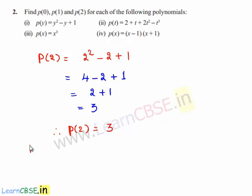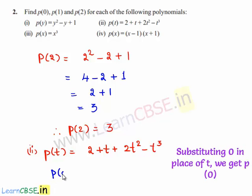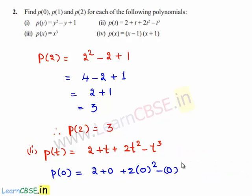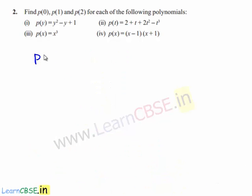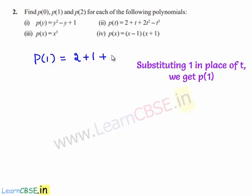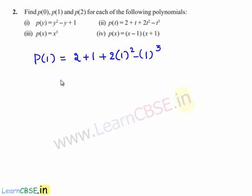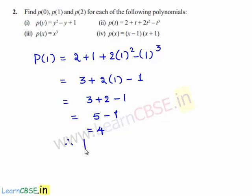Going on to the second part, p(t) equals 2 plus t plus 2t squared minus t cubed. p(0) equals 2 plus 0 plus 2 times 0 squared minus 0 cubed, which equals 2 plus 0 plus 0 minus 0, which equals 2. Therefore p(0) equals 2. p(1) equals 2 plus 1 plus 2 times 1 squared minus 1 cubed, which is 3 plus 2 minus 1, giving 5 minus 1, which equals 4. Therefore p(1) equals 4.